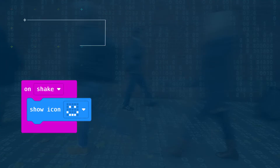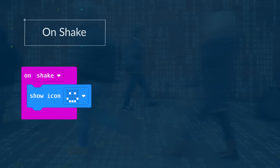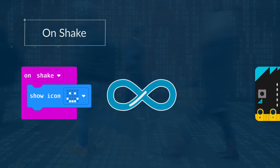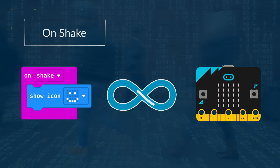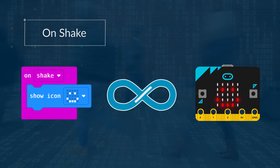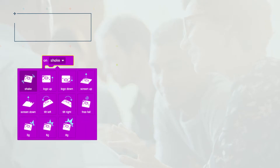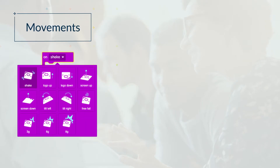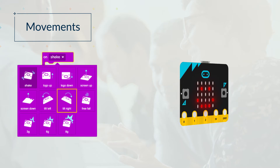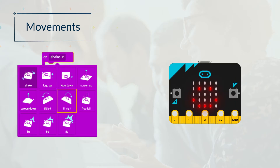This is a container block, so it's always checking if the movement occurs, and when it does, the blocks inside it will run. There are 11 built-in movements. The first 8 describe what they are — for example, Shake, Tilt Right, etc.